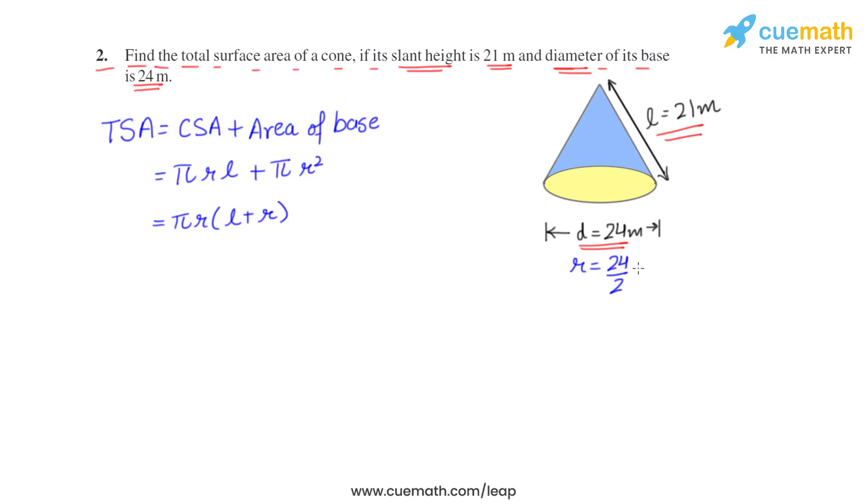So 24 by 2 which equals 12 meters. Let's substitute the values: π is 22/7, radius is 12, then slant height is 21 plus radius is 12.